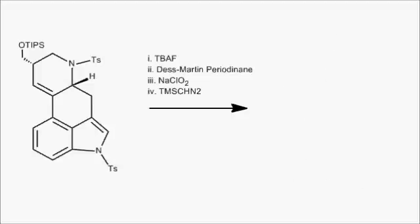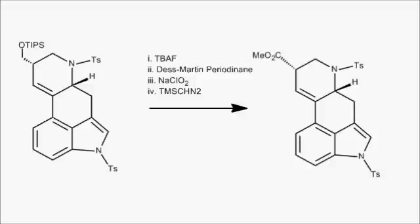And most of the work has already been done now, it's just a few more functional group modifications. Tetrabutylammonium fluoride was used to deprotect the triisopropylsilyl group. The Dess-Martin periodinane and sodium chlorite were used to oxidize the alcohol to an acid, and then trimethylsilyldiazomethane was used to esterify.